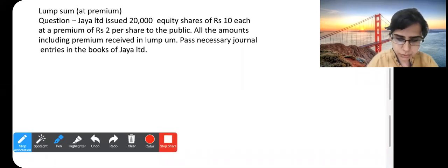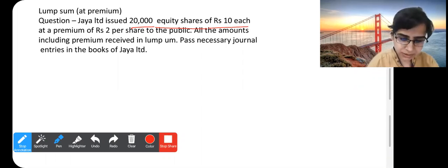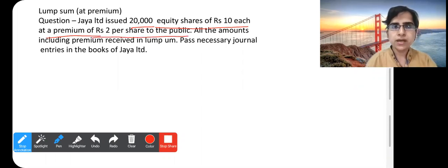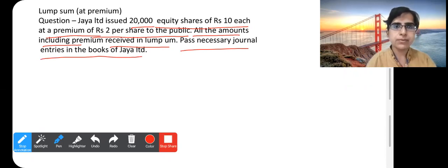Jaya Limited issued 20,000 equity shares of rupees 10 each at a premium of rupees 2 per share to the public. What happened here? 10 rupees is the face value of the share and 2 rupees is the premium. How much is the issue price? 12 rupees. All the amounts including premium are received in Lumpsum. We have to pass the journal entries in the books of Jaya Limited.